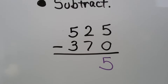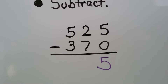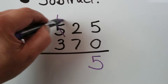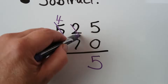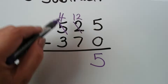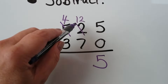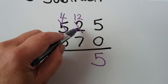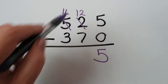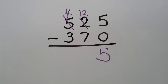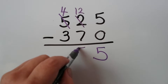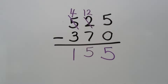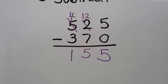We have 2 take away 7 in the tens place — we can't do that, so we ask the 5 hundreds for one. It becomes 4, and the 2 becomes 12 tens. 12 take away 7 is 5, and 4 take away 3 is 1. We have 155.